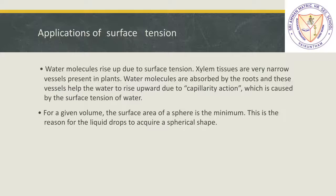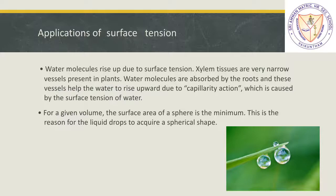Whatever liquid you take — water, for example — a little bit of water. In which shape will it have the smallest surface area? If you calculate, it will be in the spherical shape. We know that because of surface tension, any liquid will tend to have a lesser surface area, and that is why water tries to take the shape of a sphere. Water droplets — spherical shape.